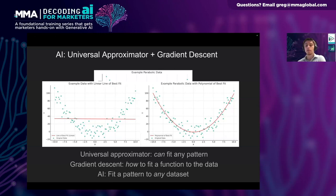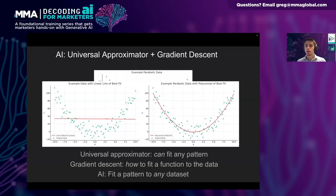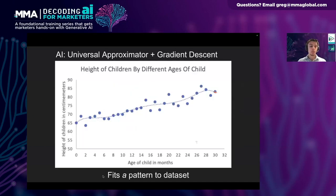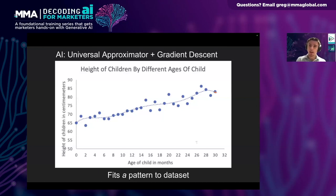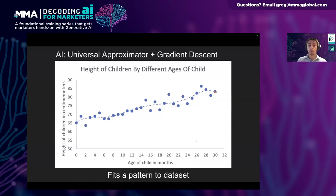AI is a combination of those two things — taking a universal approximator and using gradient descent. When you combine them, you can fit a pattern to any data set. That's why you can apply AI to such a wide range of problems. For example, it's possible using gradient descent to fit a neural network to the task of recognizing objects in a photo or translating text into another language. Going back to our height of children example, we can apply gradient descent with polynomials to get a closer fit than is possible with a straight line. The blue line in this image is a polynomial fit and it tracks the data more closely.